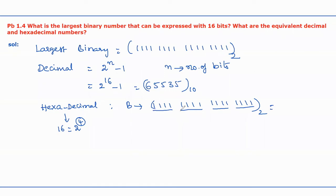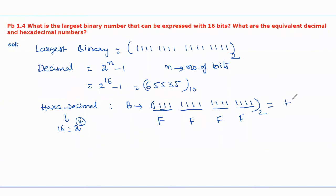Now we should write the equivalent hexadecimal digit of each group. For each group, all ones means its equivalent value is 15, and the equivalent hexadecimal digit for 15 is F. Similarly, all groups give F. Therefore the equivalent hexadecimal number is FFFF in base 16.